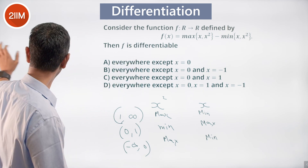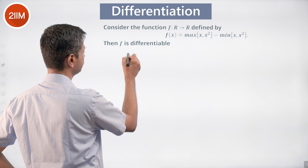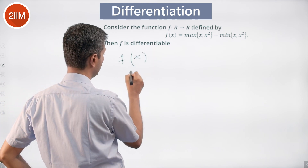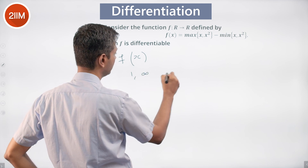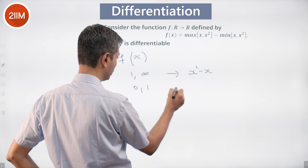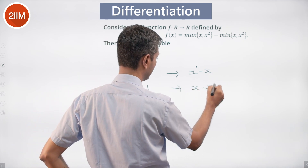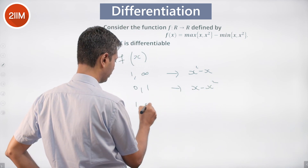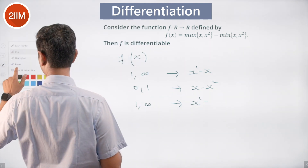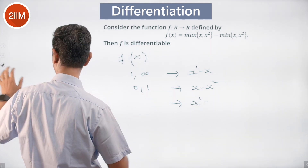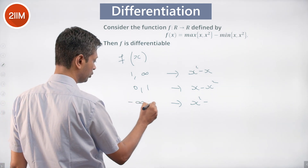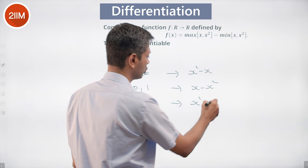So I am going to redefine f(x) as a piecewise function. For x in (1, ∞): f(x) = x² - x. For x in (0, 1): f(x) = x - x². For x in (-∞, 0): f(x) = x² - x.